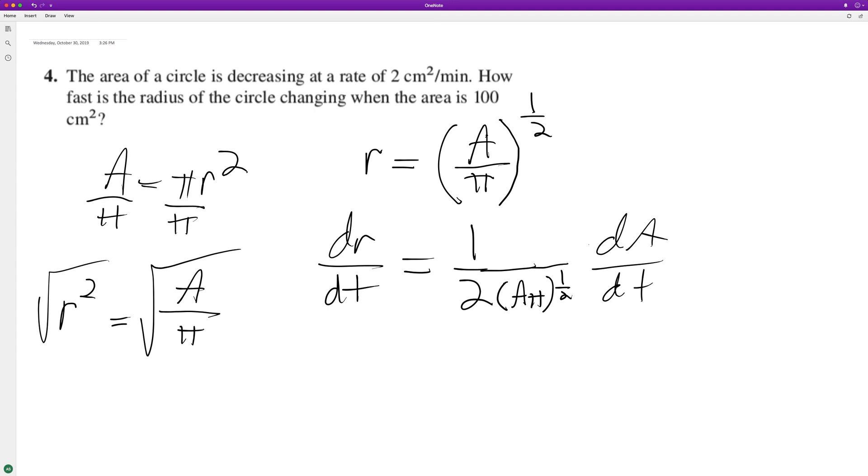Now that we have this, we can go ahead and solve for dr/dt. So dr/dt is going to be equal to one over two times area, which is 100, times pi raised to the one-half.